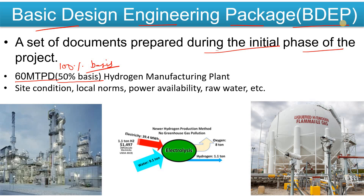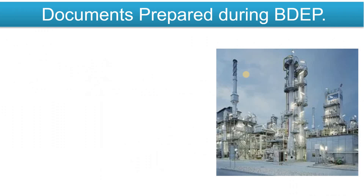Let's suppose there was a kickoff meeting and you collect documents — the site conditions, which you could ask from the client, local norms used in their plant or locality, power availability, raw materials, etc. Whatever your requirements, you get those details from the client. Then a process engineer will prepare the Basic Engineering Design Package documents.